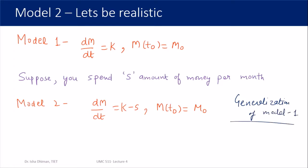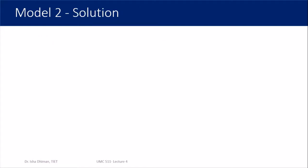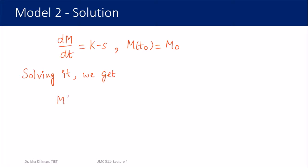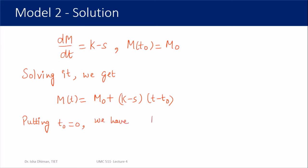The meaning of generalization is that if you fix s = 0 in Model 2, you get Model 1 — so Model 1 is a special case of Model 2. The solution of Model 2 follows the same approach: M(t) = M₀ + (k − s)(t − t₀). Setting t₀ = 0 gives M(t) = M₀ + (k − s)t. Model 2 is also a linear model, but now controlled by three parameters: M₀, k, and s.